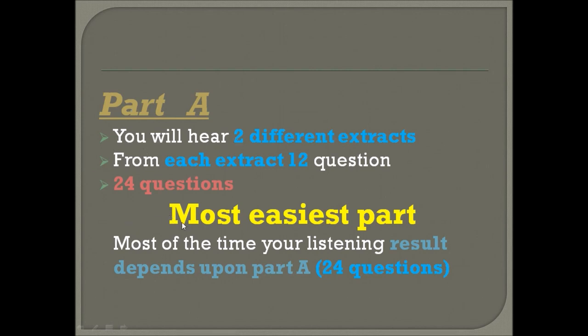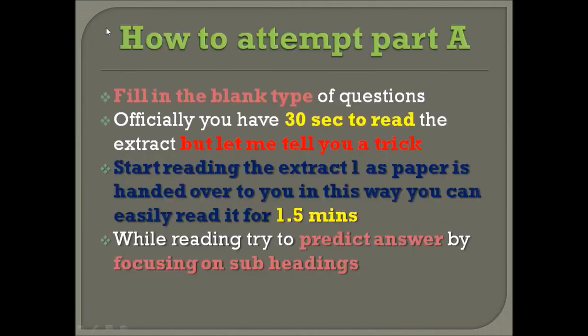Keep in mind that OET listening part A is the easiest part of the exam. Being the easiest part and having a large proportion of the questions — 24 out of 42 — makes it easier for you to pass. If you score 21, 22, 23, or even 24 out of 24, you will definitely be on the safer side and can easily pass your OET listening exam.